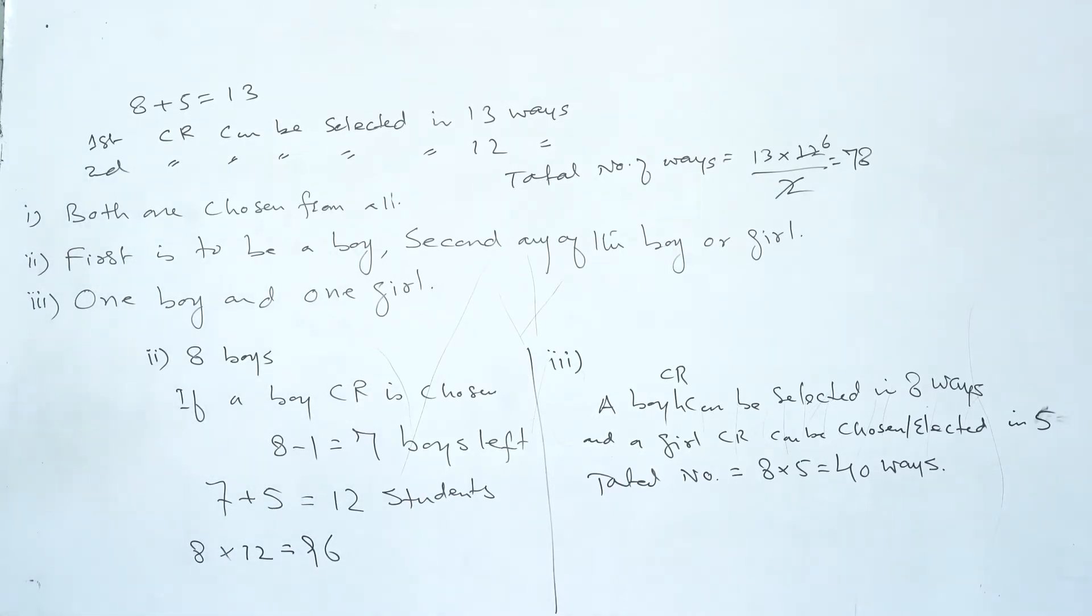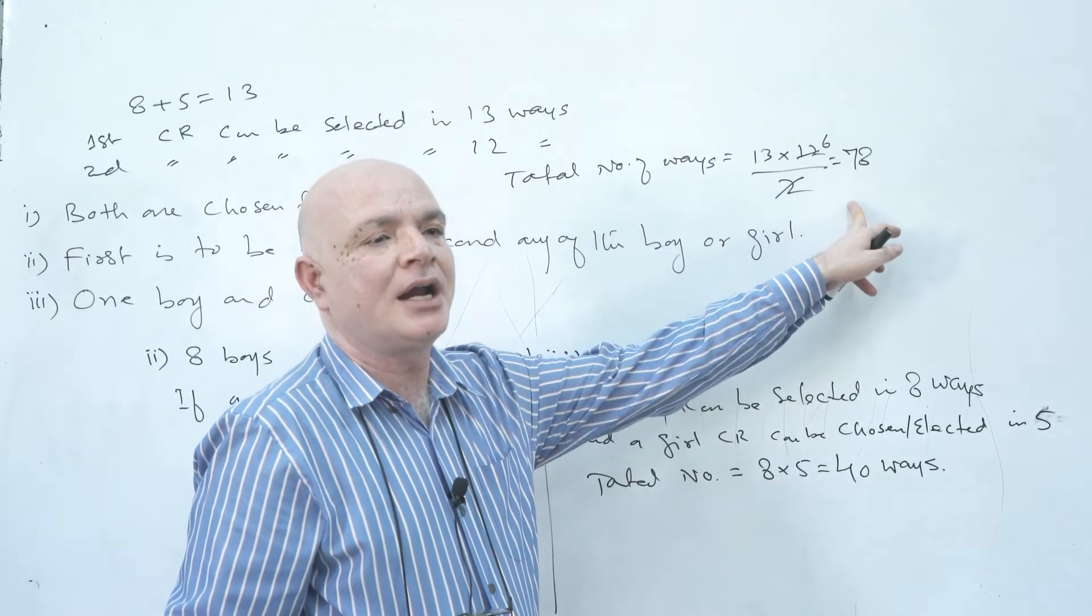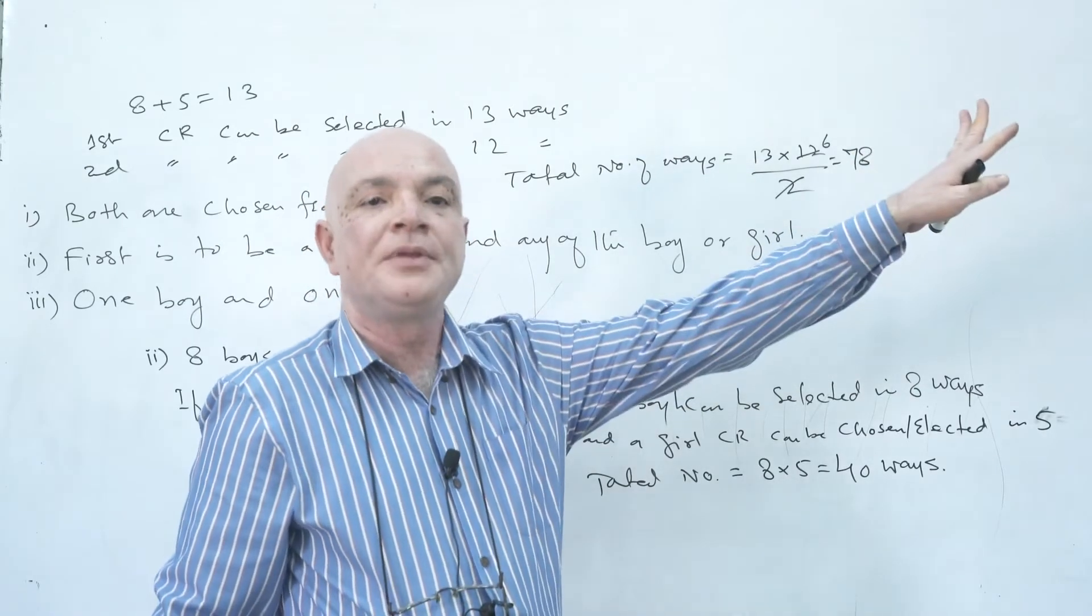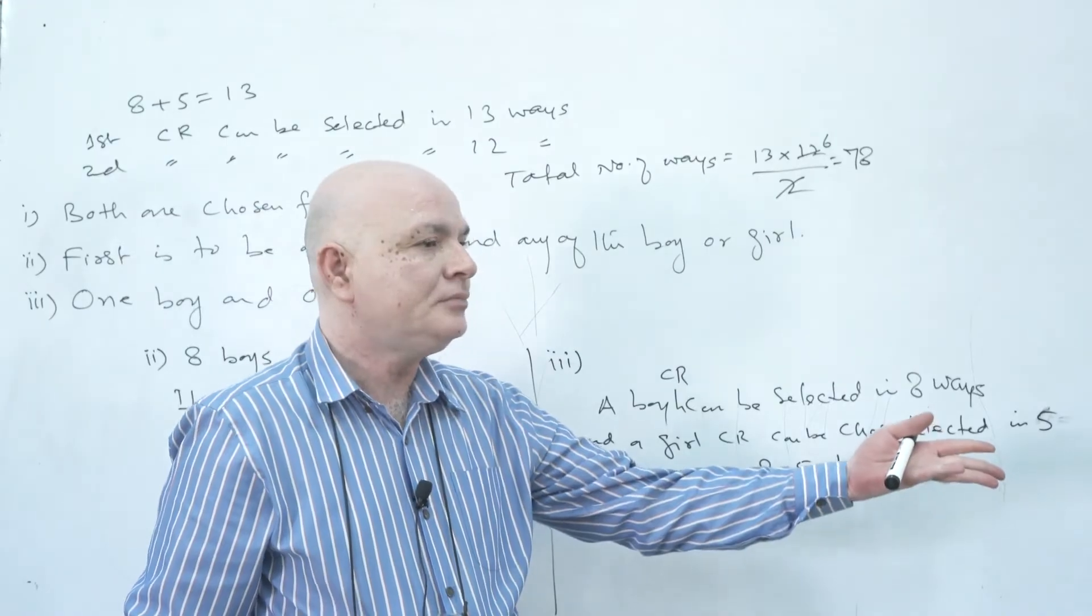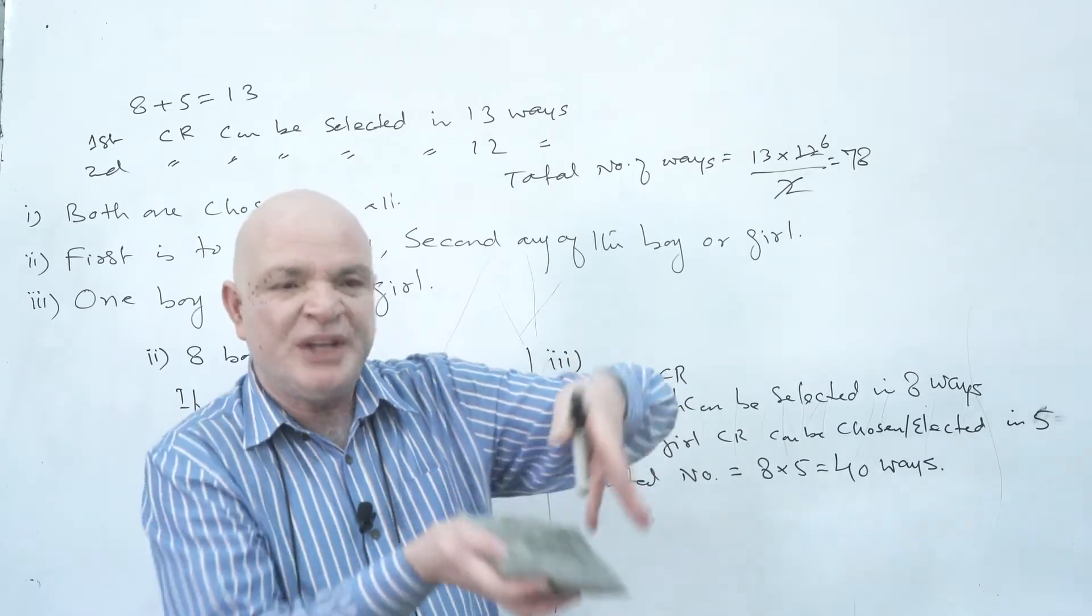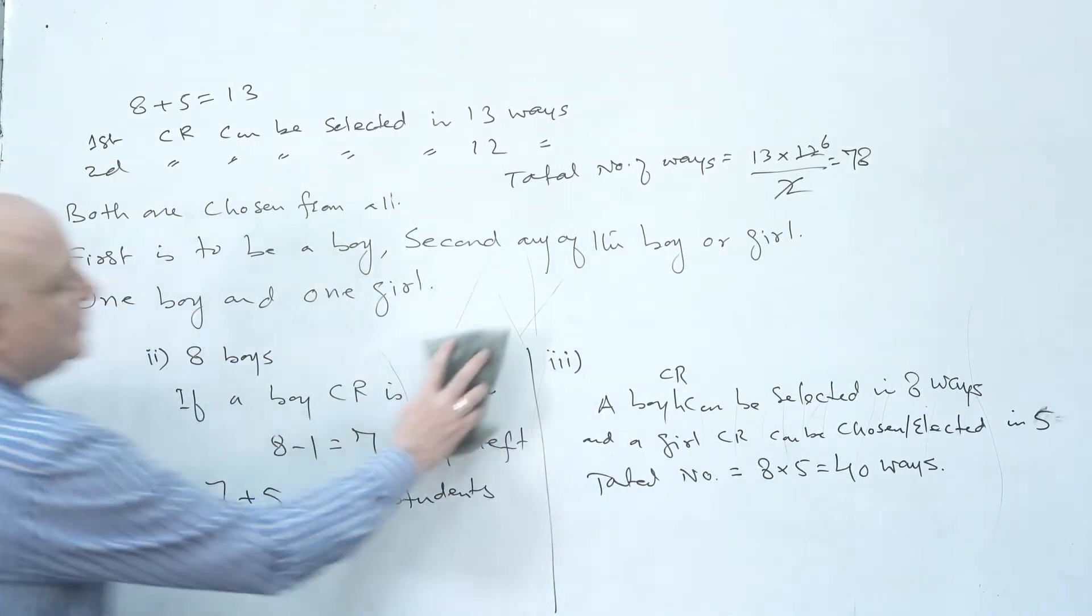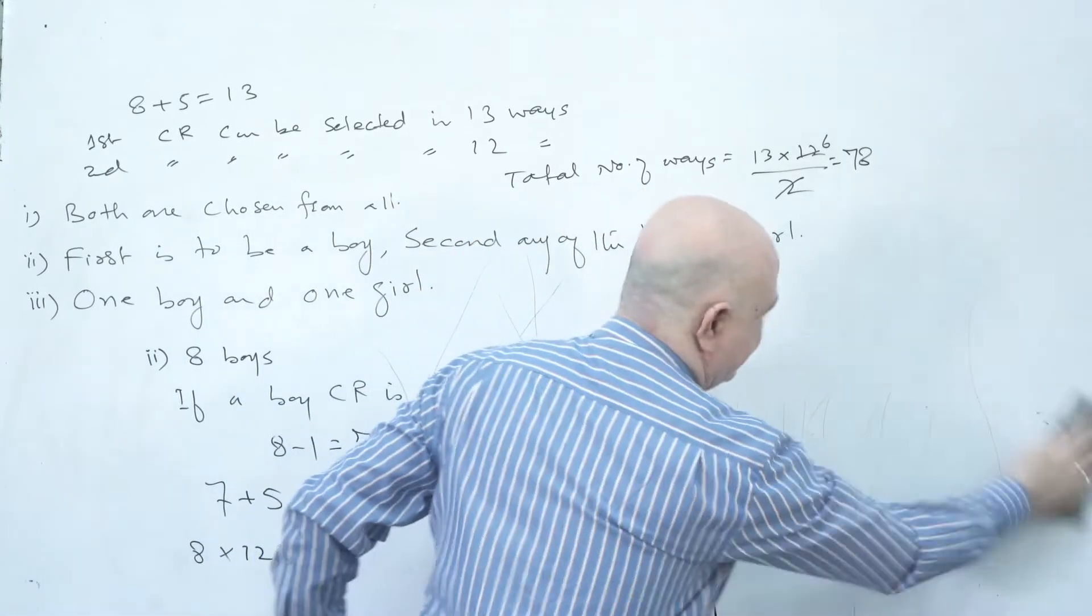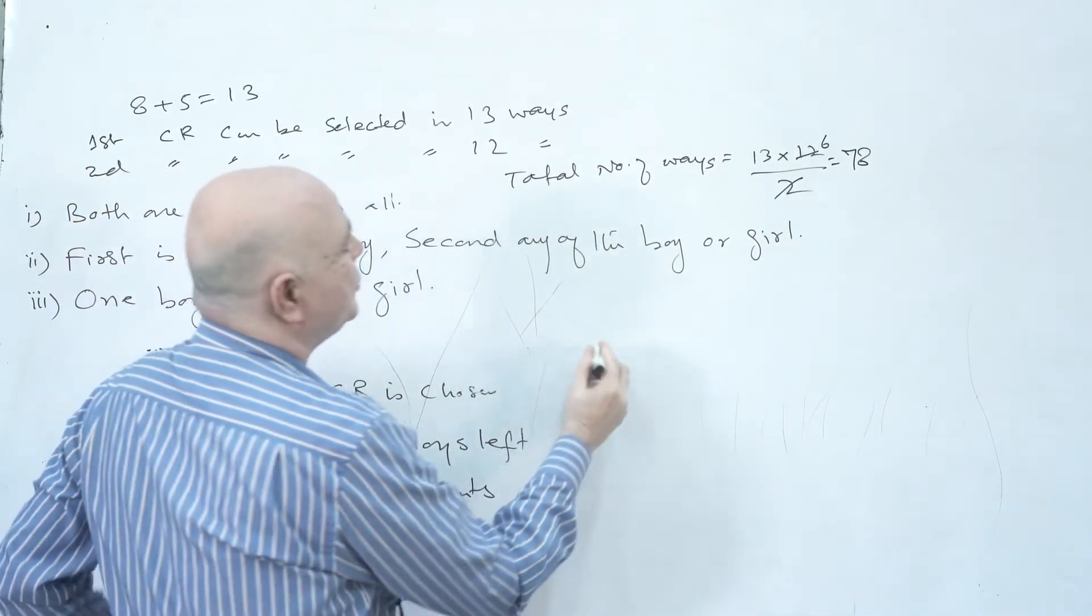Now to prove this one, whether this number is okay or not. If you are going normally, thirteen into twelve, if you multiply, the number would be more, so it would be wrong. How are we decreasing the number? Say there are three boys and two girls.